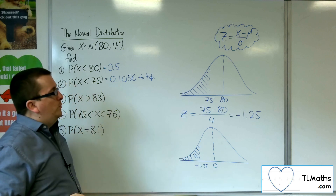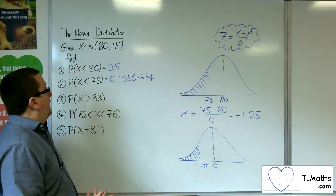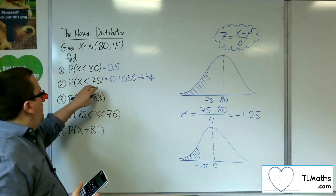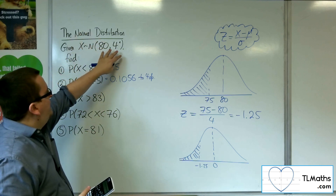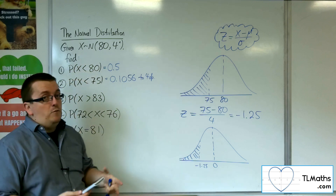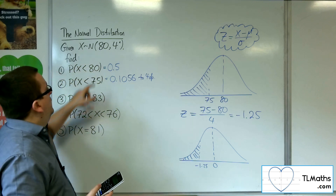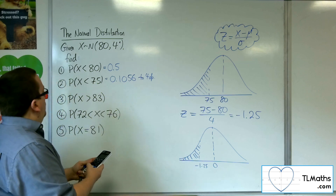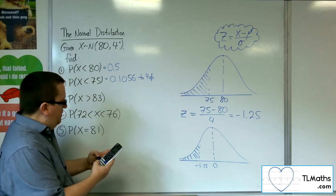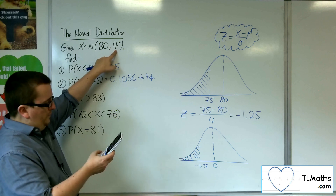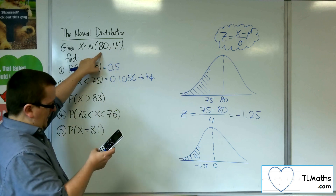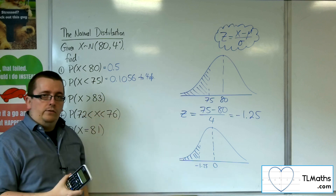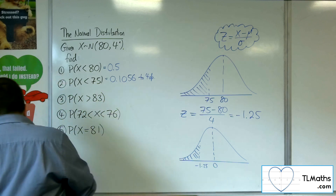We also want to check that we can do this straight off the bat. If we keep 10 standard deviations as the norm, then 80 minus 40 gives a lower of 40. Upper is 75, sigma is 4, mean is 80 — and we get 0.1056. Same value.